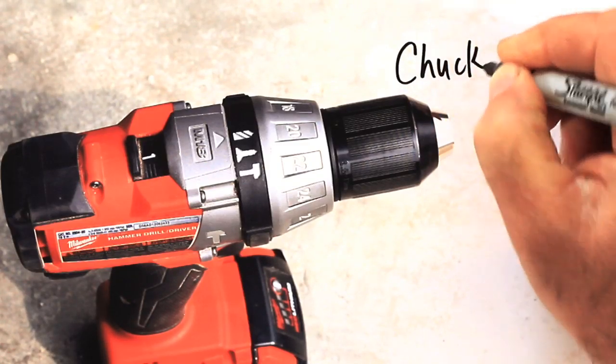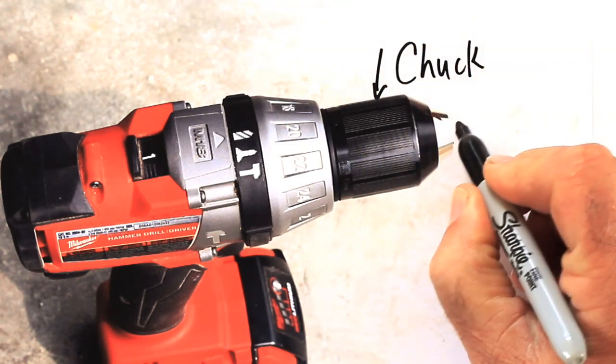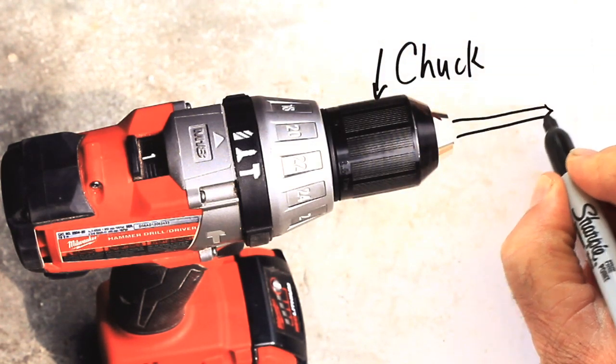This is the chuck, that's what you call the end of the drill right here, and it can grip things, most commonly a drill bit.